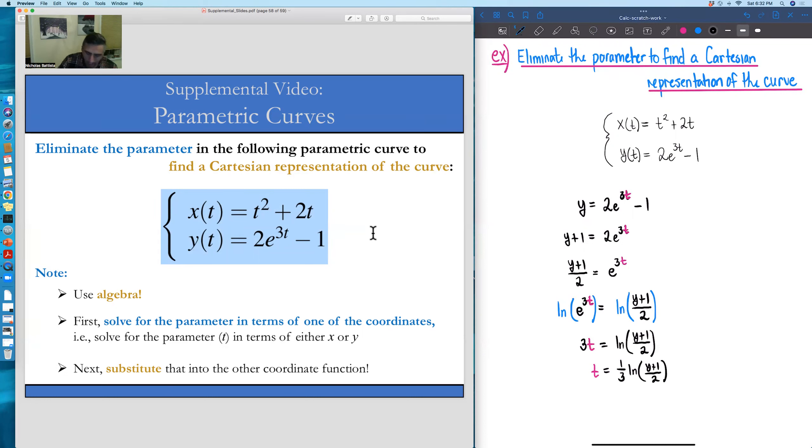So at this junction, we haven't yet eliminated the parameter and found a Cartesian representation of the curve, but we're on our way there.